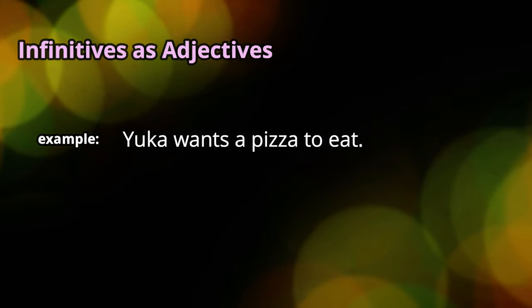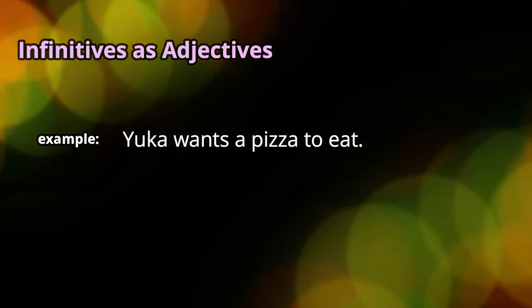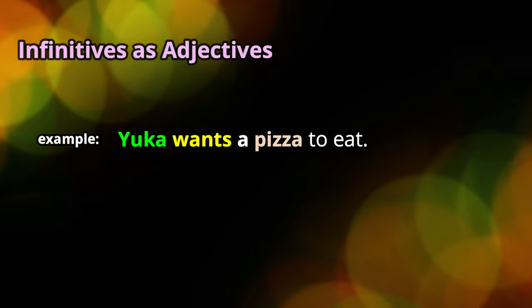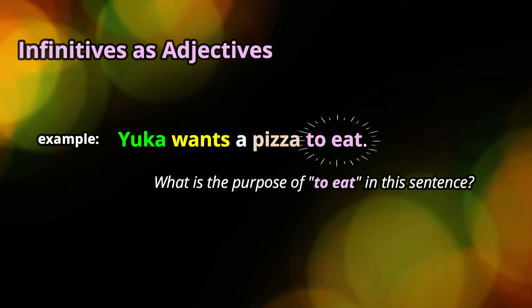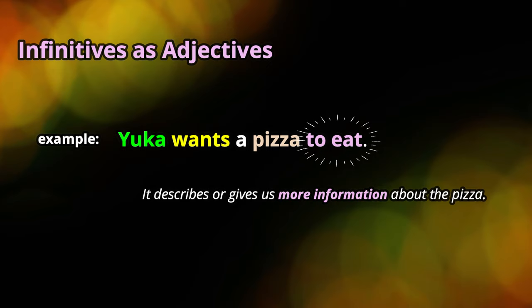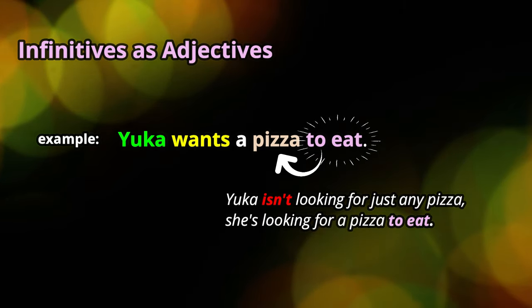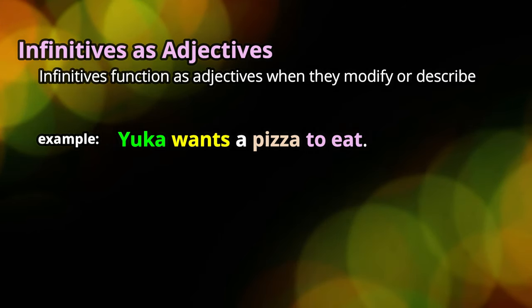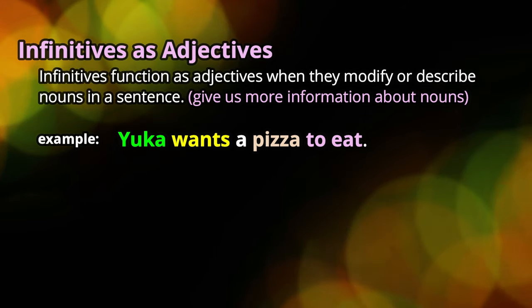Now we're going to look at an example of how an infinitive is being used as an adjective. In the example: Yucca wants a pizza to eat. In this sentence, the subject is Yucca, the verb is wants, and the direct object is pizza. We also see the infinitive 'to eat.' What is the purpose of 'to eat' in this sentence? Well, it describes or gives us more information about the pizza. Yucca isn't looking for just any pizza — she's looking for a pizza to eat. So the infinitive functions as an adjective because it tells us more about the noun pizza. And that's what adjectives do — they give us more information about nouns.